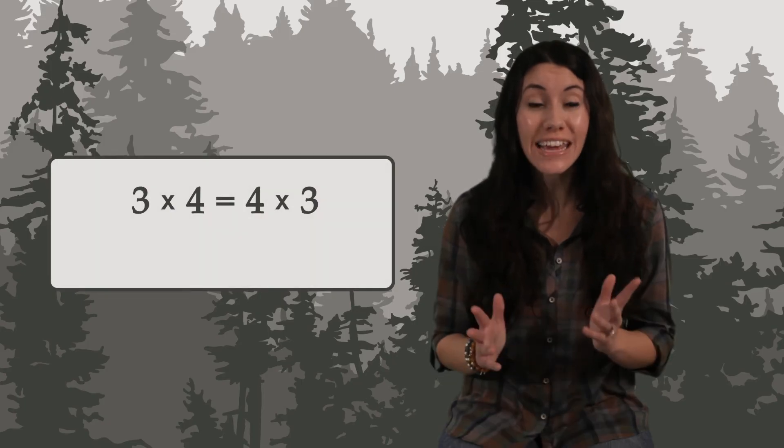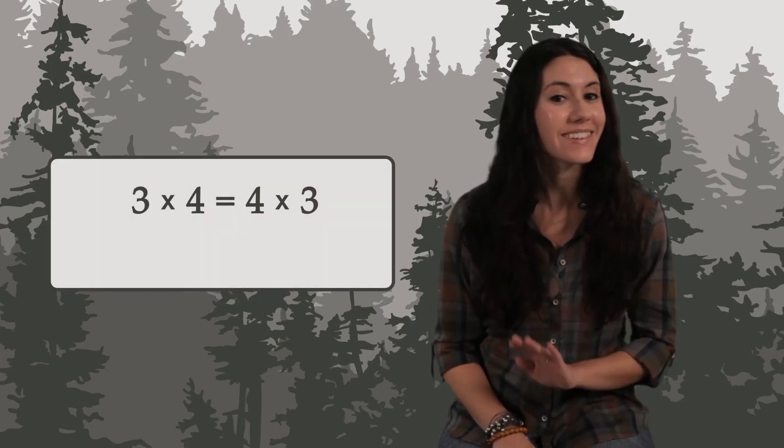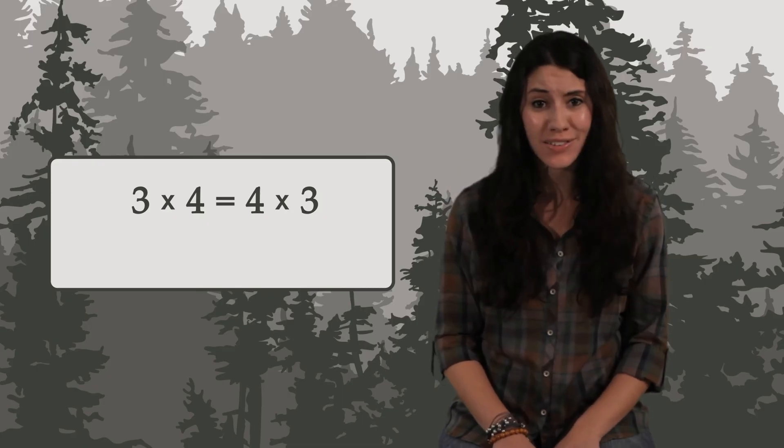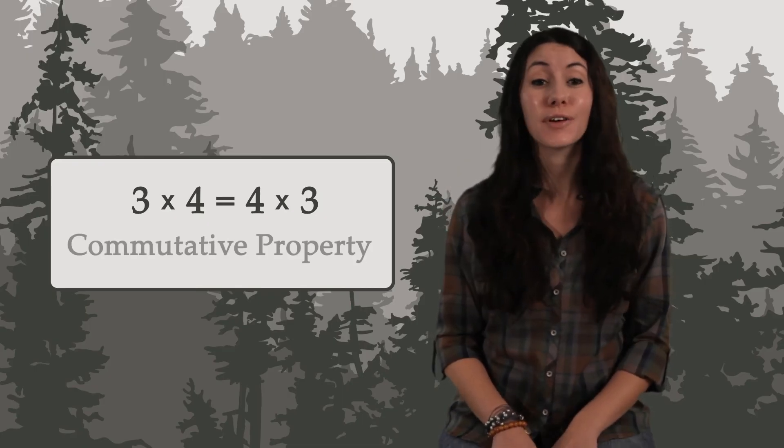The moral of this is that 3 times 4 equals 4 times 3. It does not matter the order in which you multiply. You'll always get the same answer. This is called the commutative property.